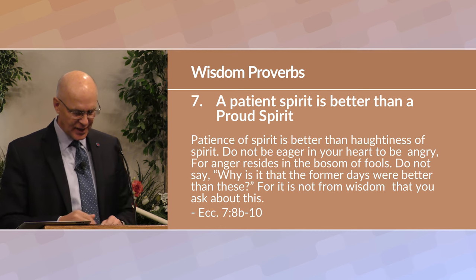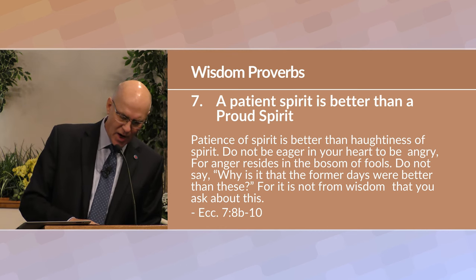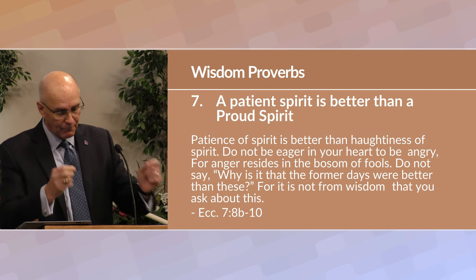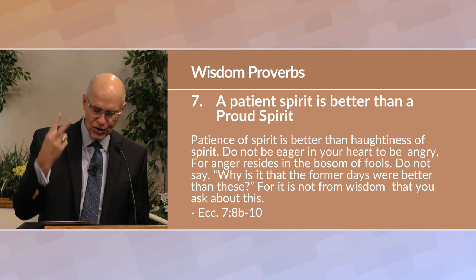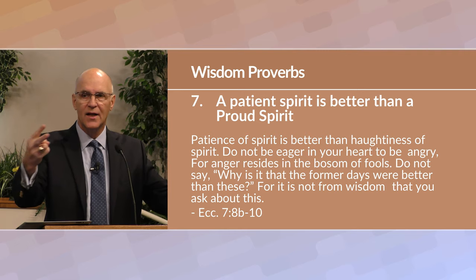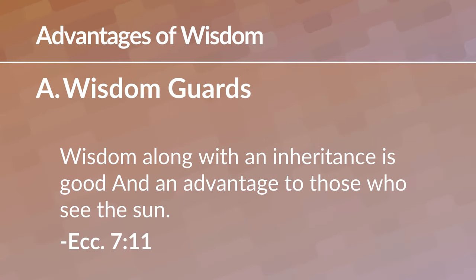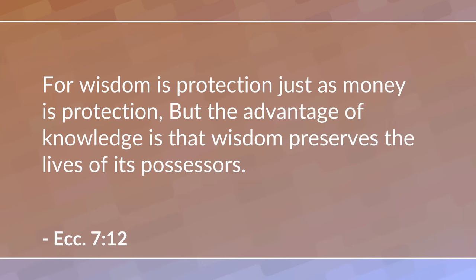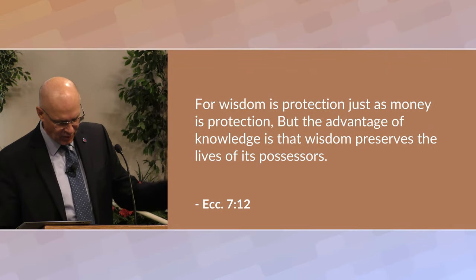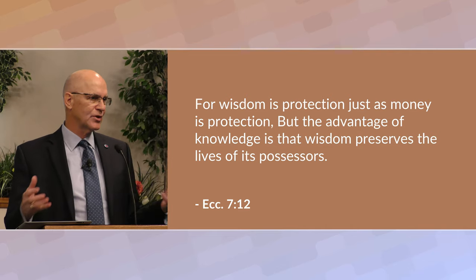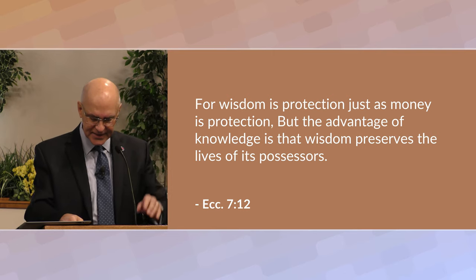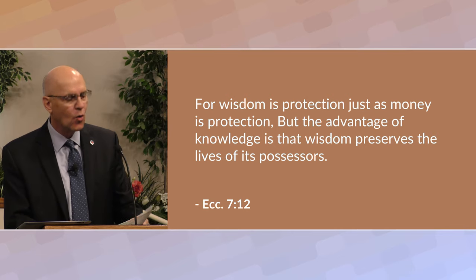In the last four verses of this section, Solomon explains the advantages of wisdom. He's already said the foolish and wise end up the same way — they both die. But he now concedes the wise person has two advantages over the fool. First, wisdom guards against pitfalls. He says, 'Wisdom along with an inheritance is good and an advantage. For wisdom is protection just as money is protection. But the advantage of knowledge is that wisdom preserves the lives of its possessors.' The wise person makes fewer mistakes along the way. Wisdom does not extend life, but it can enable one to have a better quality of life.